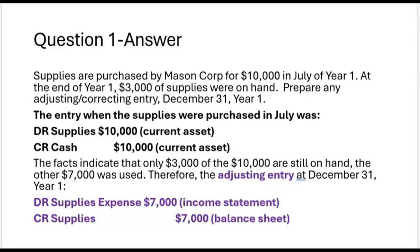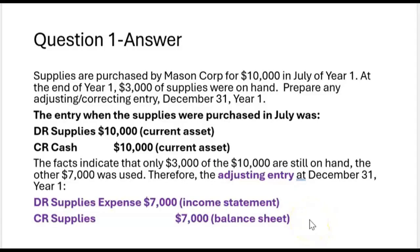And they're not the same account. Supplies expense is an income statement account — it's an expense. Supplies, the asset, was set up for $10,000 in July, and now we want to reduce that to show that only $3,000 of supplies are still on hand. So this would be the proper adjusting entry needed at year-end. There's no correcting entry needed because no mistake was made, but there is an adjusting entry needed to bring the accounts up to date at the end of the accounting period.